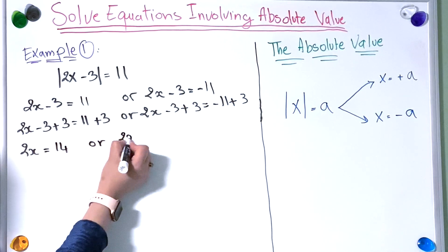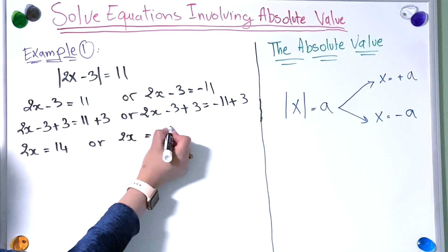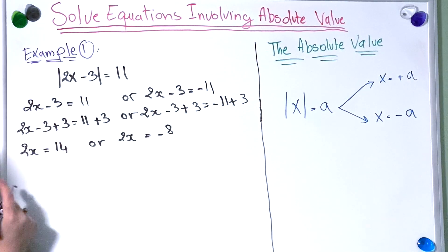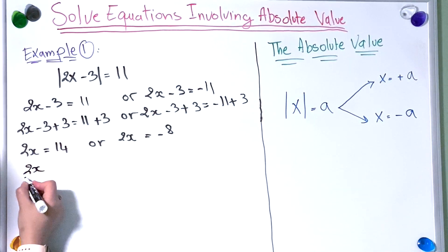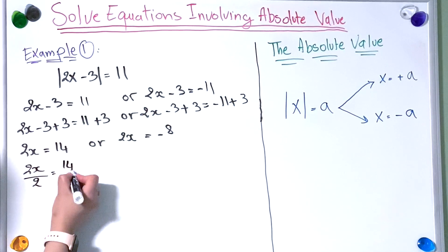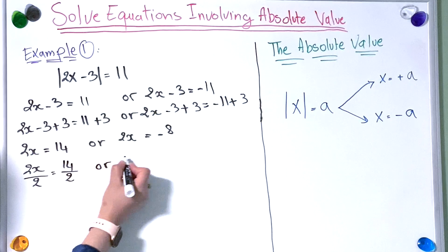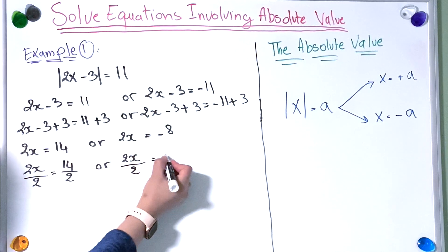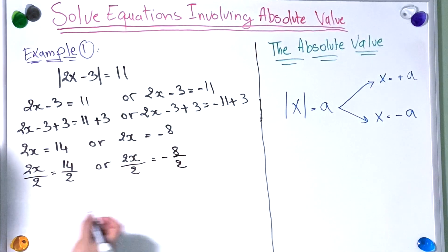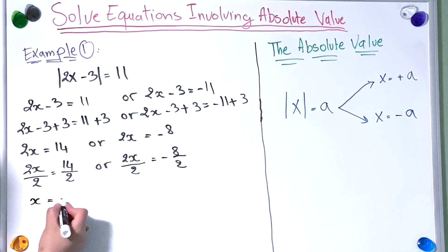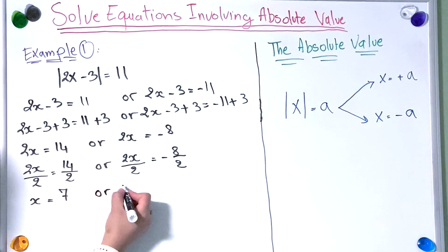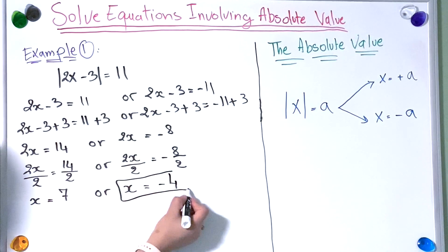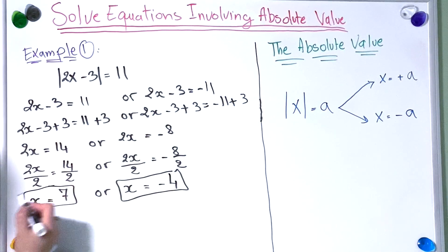So 2x equals 14, or 2x minus 4 equals minus 8. Now to find x we're going to divide both sides by 2. So x equals 7, or x equals minus 4. Now we have found the x solutions.